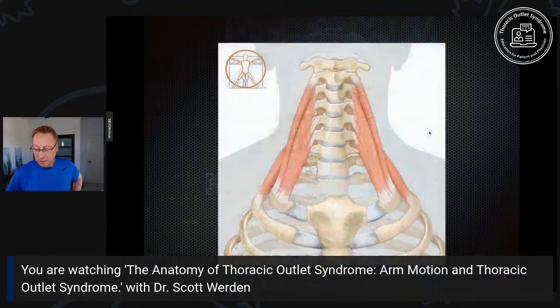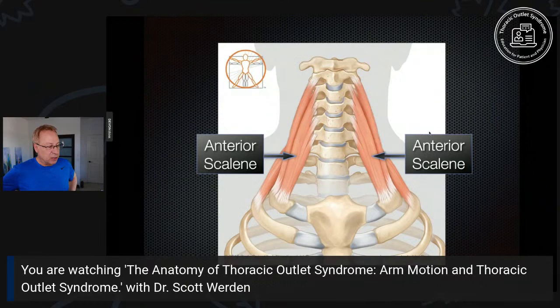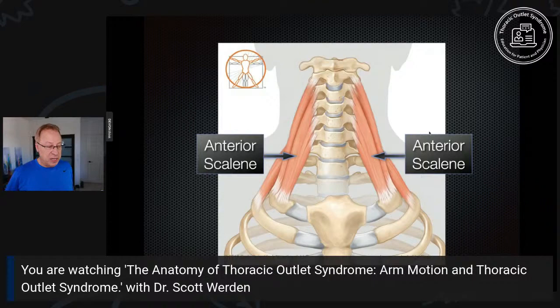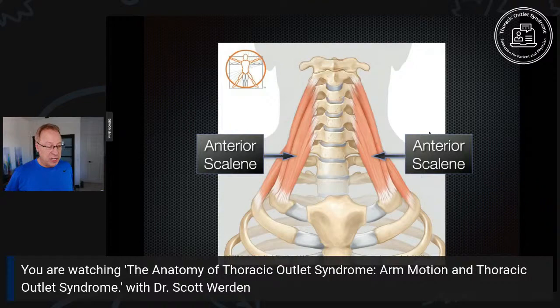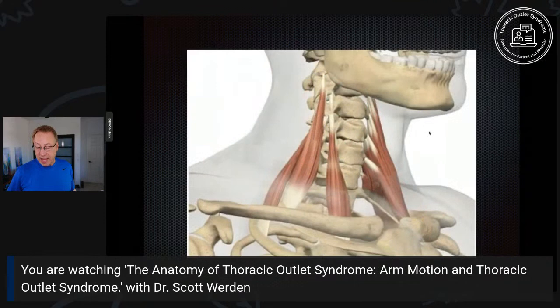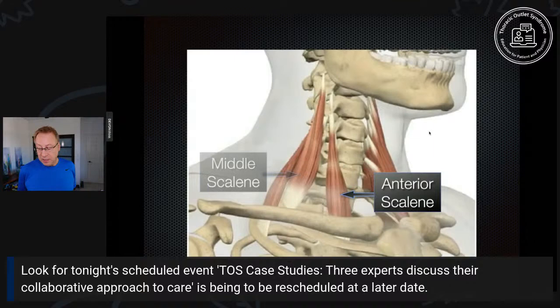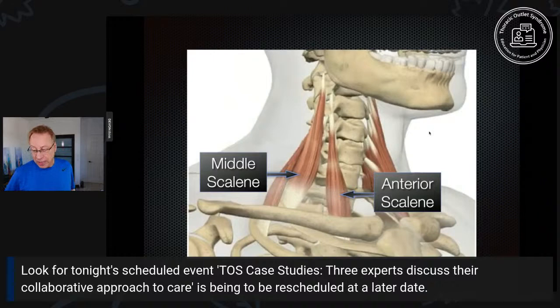Once the nerves leave the thoracic spine and the artery and vein leave the chest, they enter the thoracic outlet and pass between a series of muscles. The most important is the anterior scalene muscle. You'll see the anterior scalene and the middle scalene muscle — these two muscles define the scalene triangle. There's the anterior scalene in front and the middle scalene in back, and between them we get this space outlined in purple — that is the scalene triangle.